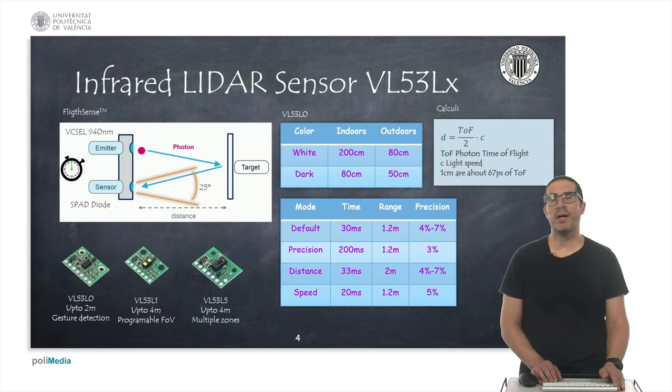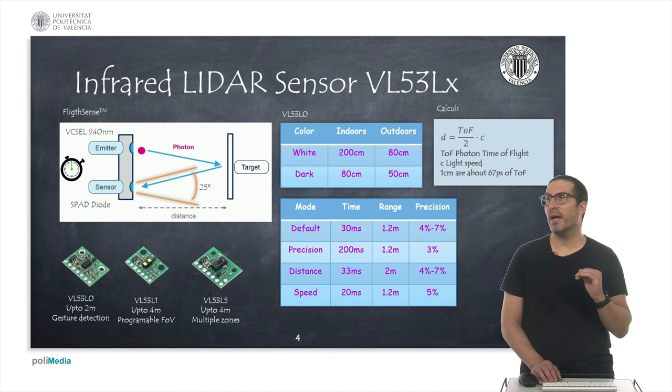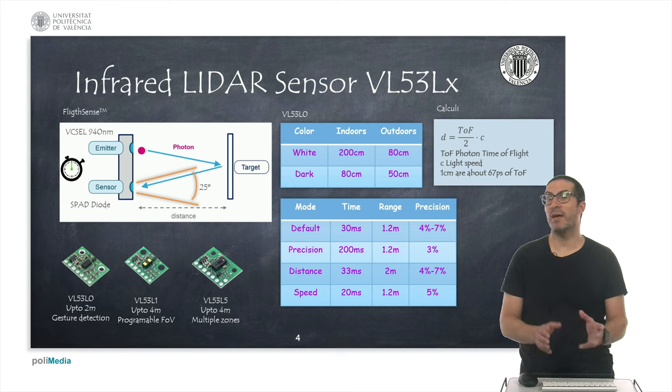Then we have a new type of infrared sensors that are based on a laser sensor indeed, that has an emitter, a laser emitter, which is emitting in a spectrum of light of 940 nanometers, and the sensor also has a SPAD diode, this is an avalanche photodiode that is working on the avalanche zone of the diode.